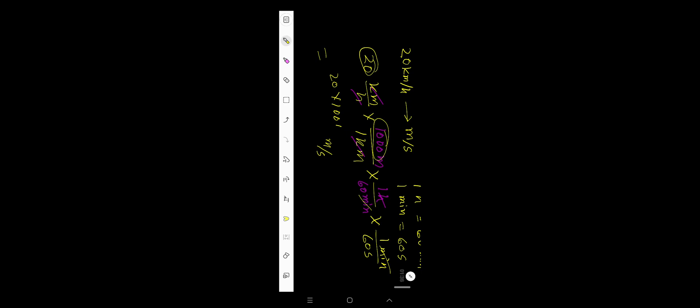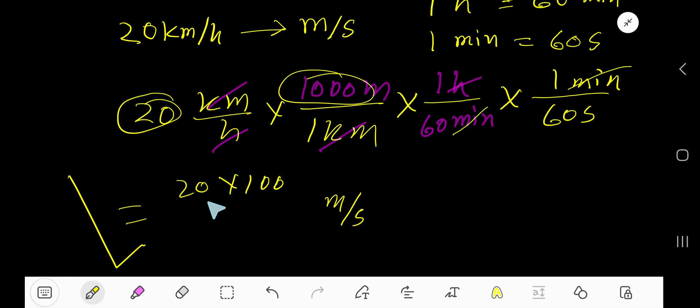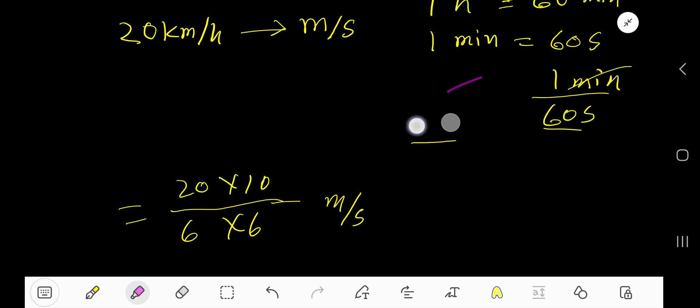Bottom number is 60 times 60. So cancel this zero, this zero, then this zero, this zero. So we are getting this. Now divide this 6 by 2, we'll get 3. Divide this 20 by 2, we'll get 10.